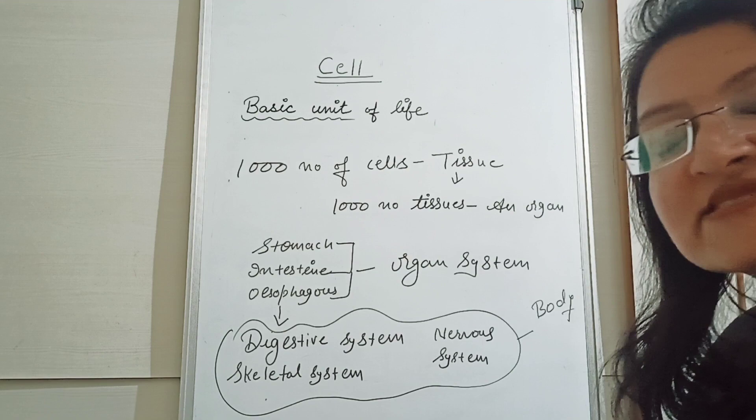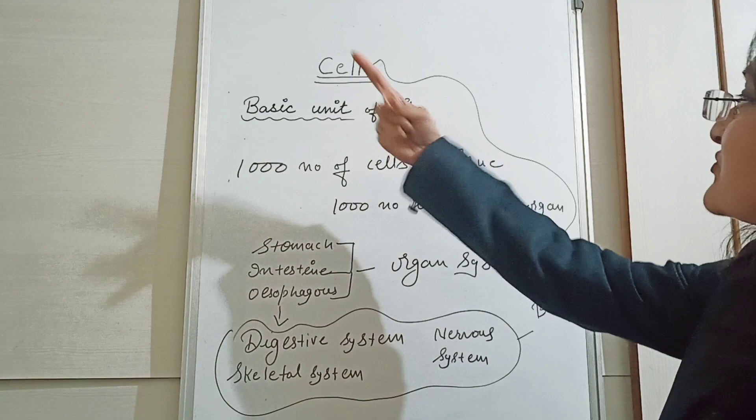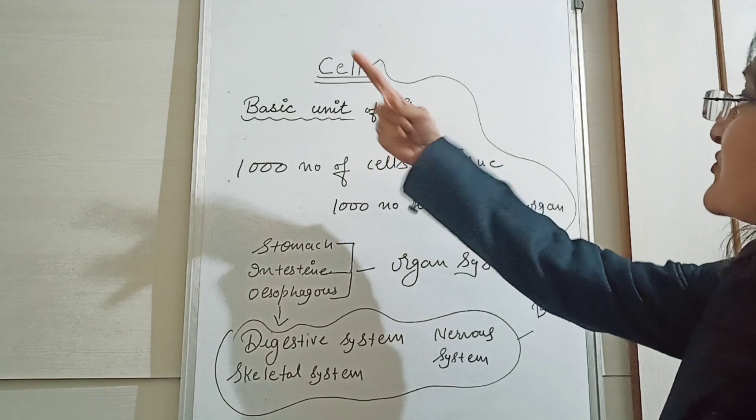So, what is the basic unit of the body? It is the cell. We can trace from the end point, the body, back to the starting point, the cell. So we can say that the cell is the basic unit of life.